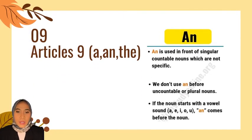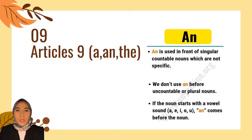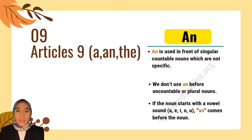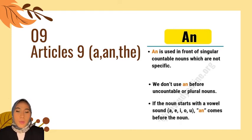Next is the article 'an'. Like the article 'a', it is used to show that the noun is singular and countable, but it is followed by words that start with a vowel sound, like a, i, u, e, o.